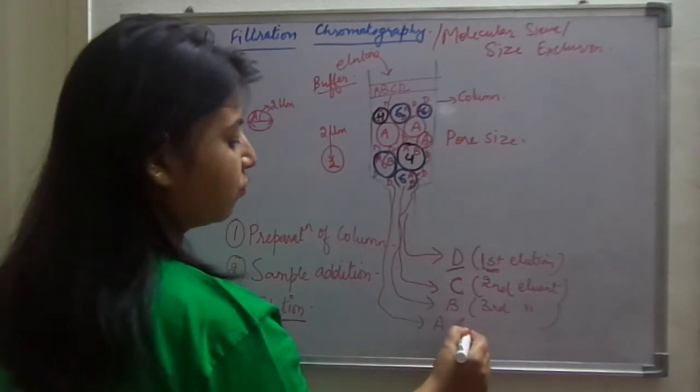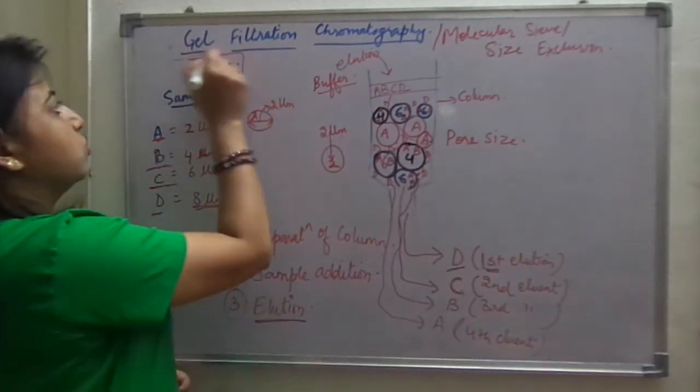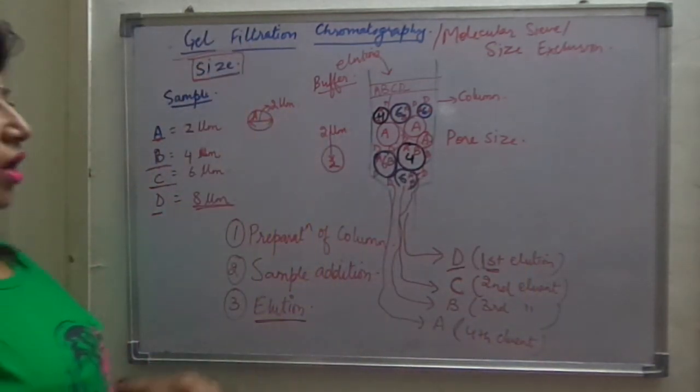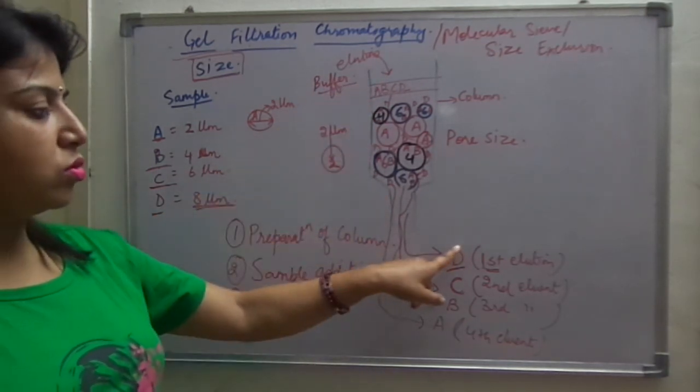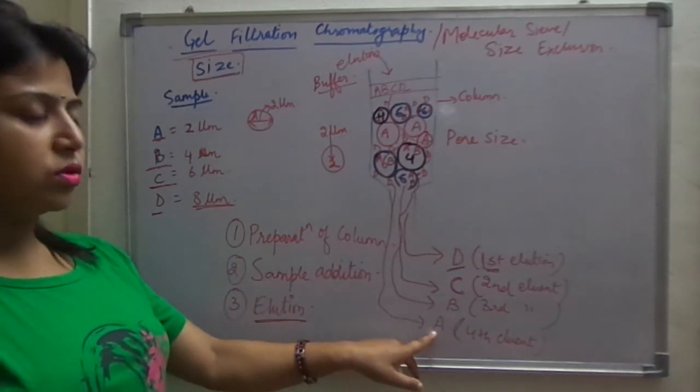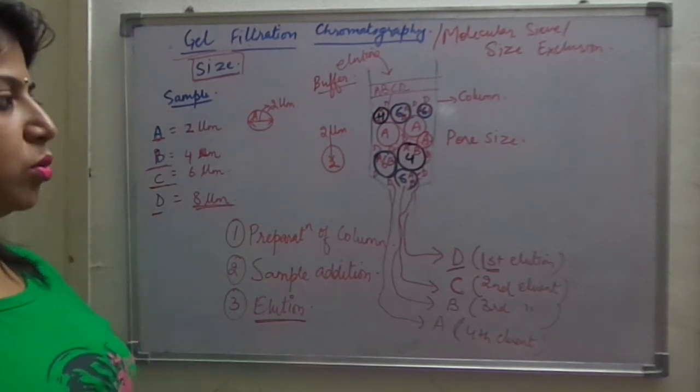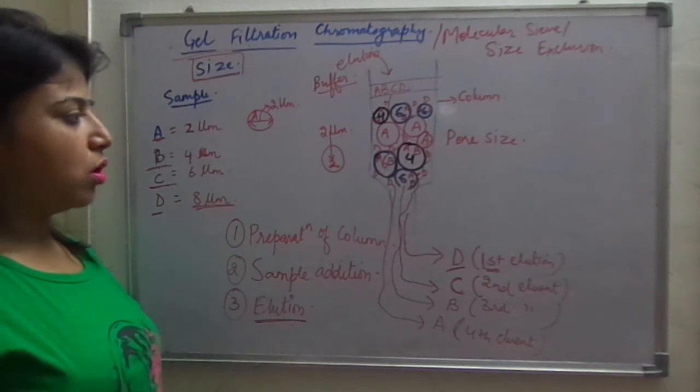So, this is the fourth eluant or last eluant in this case. So, in case of gel filtration chromatography, through a gel, the sample components are filtered and separated on the basis of size. The largest component being eluted out first and the smallest component being eluted out in the last. That's all. Thank you.